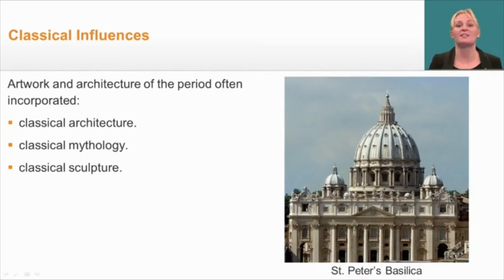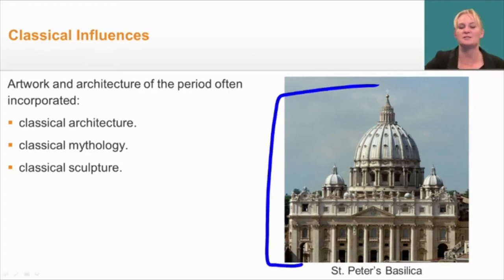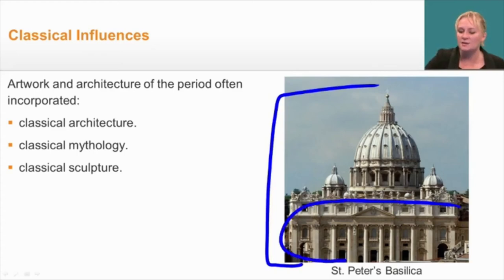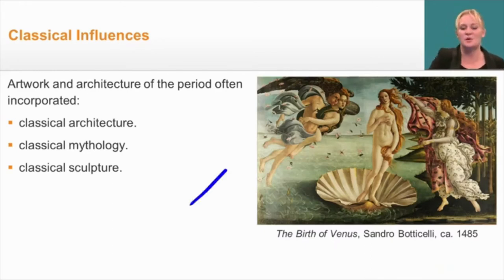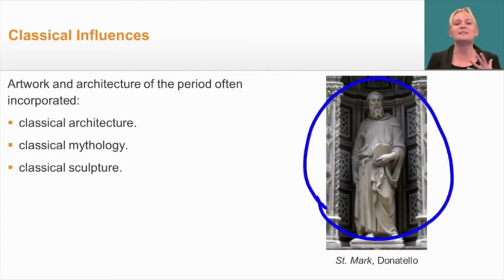Classical influences — meaning hearkening back to ancient Rome or ancient Greece — also shaped Renaissance art and architecture. Here's St. Peter's Basilica in Rome with its large columns, which are reflected in Renaissance art frequently. There was also classical mythology — here's a portrait of the Greek goddess — and classical sculpture: this figure of St. Mark is wearing Greek-style robes. You can see what a strong influence these classical themes had in Renaissance art.